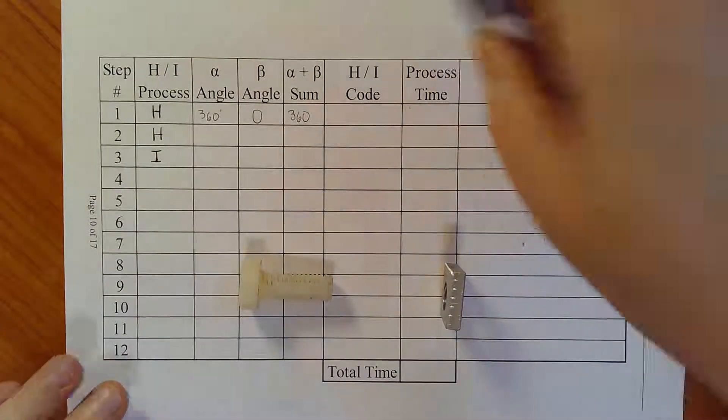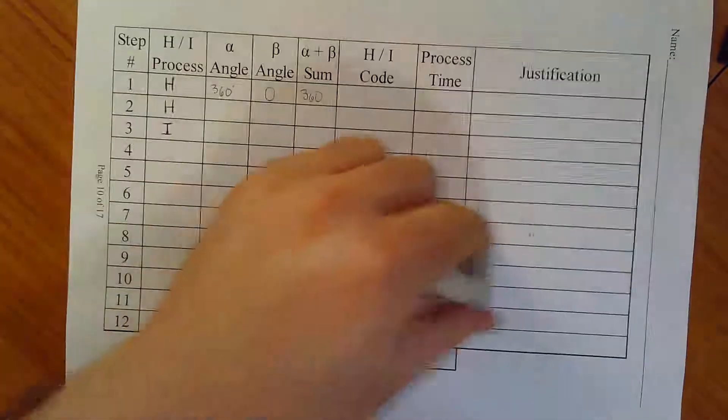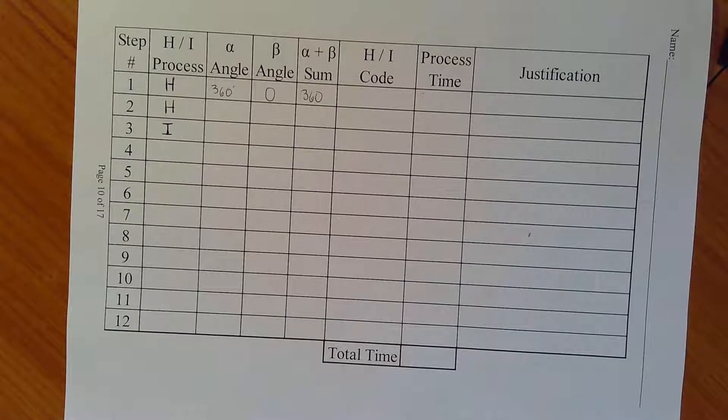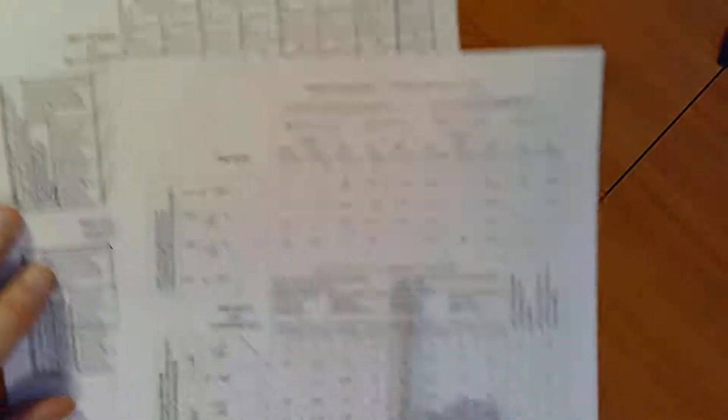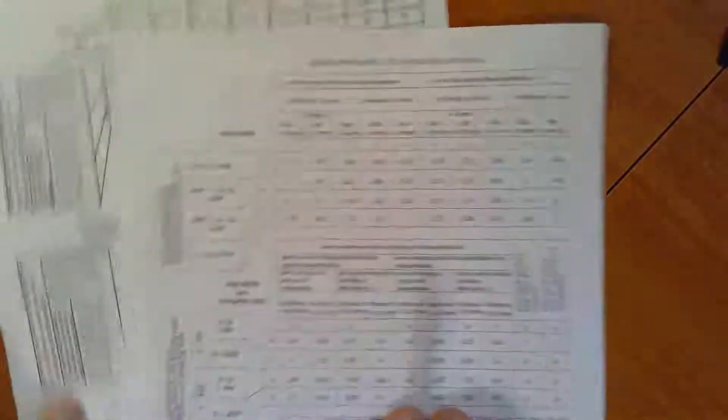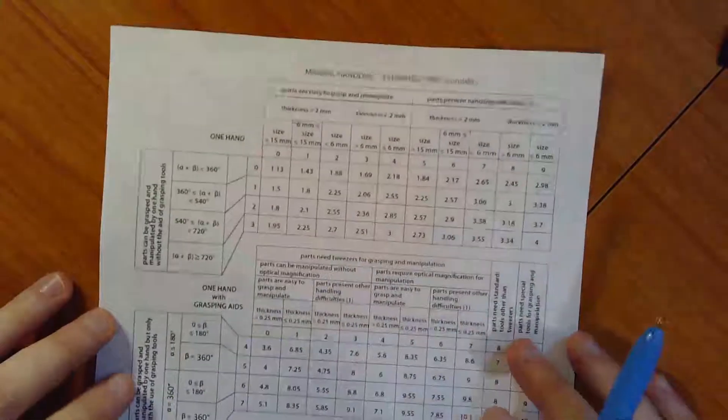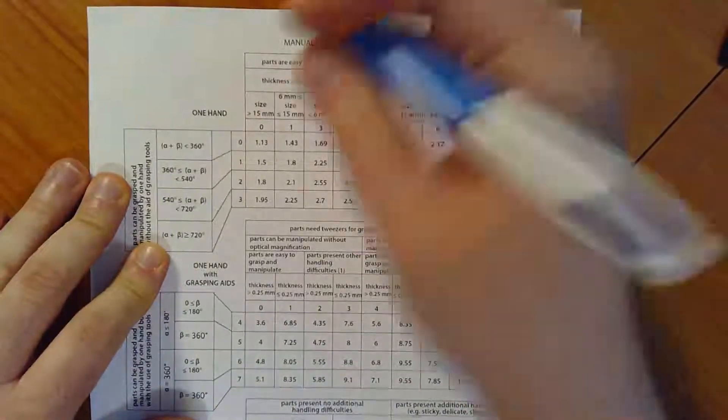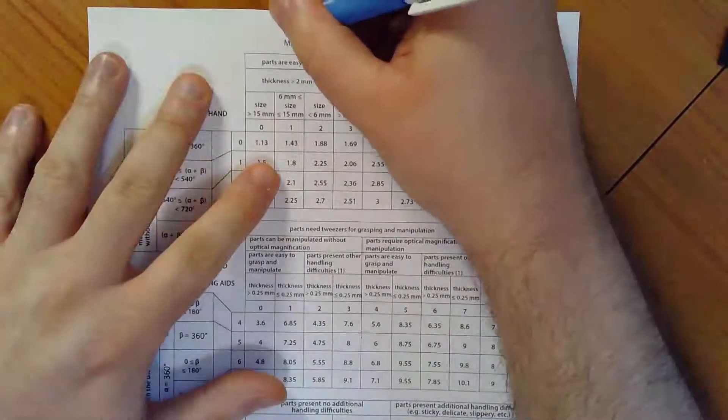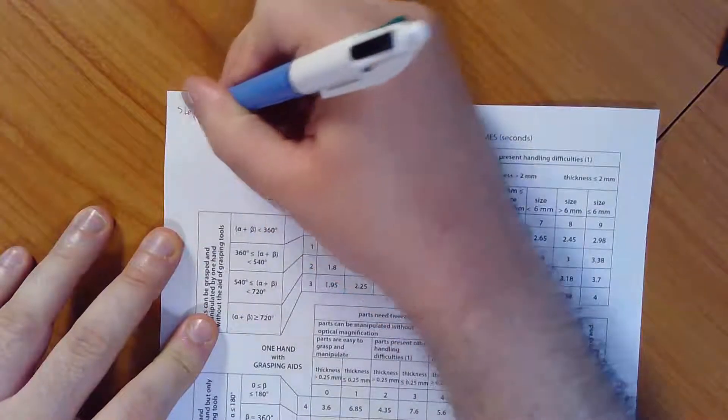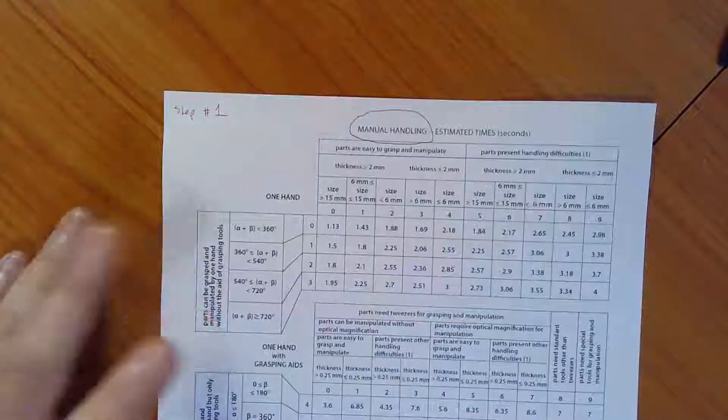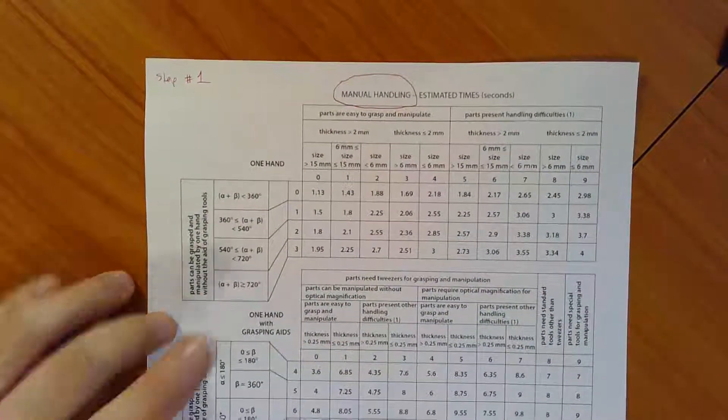Where do I get the handling and insertion code? Well, it turns out that Boothroyd and Dewhurst have prepared charts for us. I'll show you there's two different charts because you can either have a handling process or an insertion process. Here is the chart that's associated with manual insertion and then here is a separate chart that's associated with manual handling. Since I'm dealing with a handling process and just picking up the bolt, I'm going to start with the manual handling chart. So I'm going to use my red ink here. I'm just going to circle manual handling to remind myself that that's what I'm doing. This, by the way, is step number one.